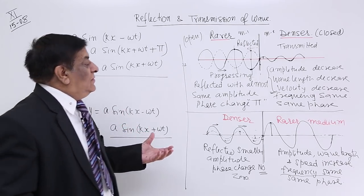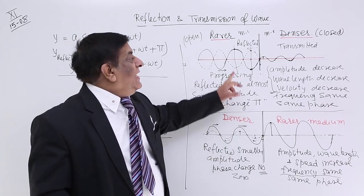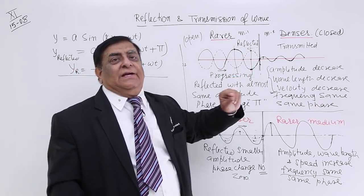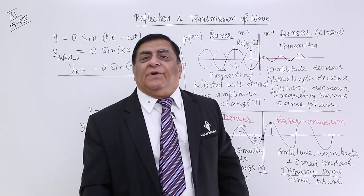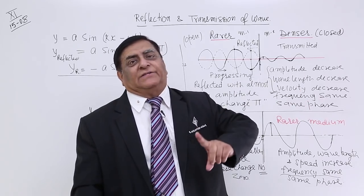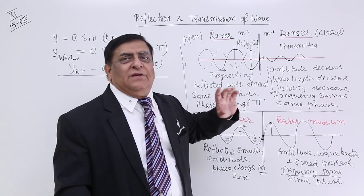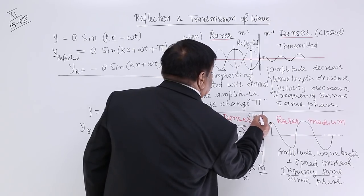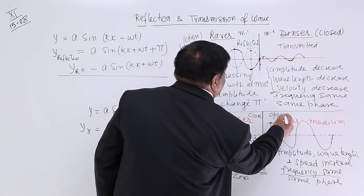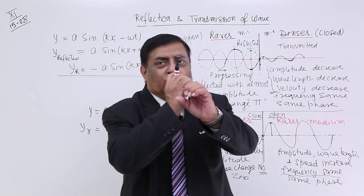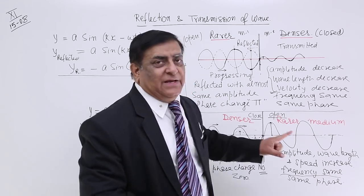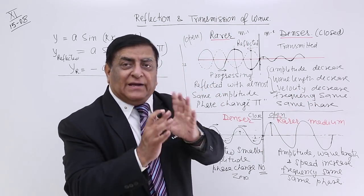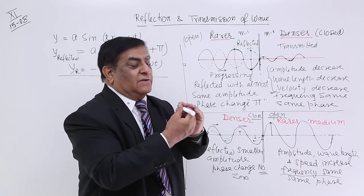So there can be reflections, and after reflection in one medium we will find two waves. This was the main purpose of this study — to show how we can create two waves of the same frequency in one medium, and the answer is by reflection. This reflection happens in both cases: rarer to denser (open to closed medium) and denser to rarer (closed to open medium). For example, inside a flute the air is closed and behaves like a denser medium, while outside is open and behaves like a rarer medium — so reflections occur from the boundary.